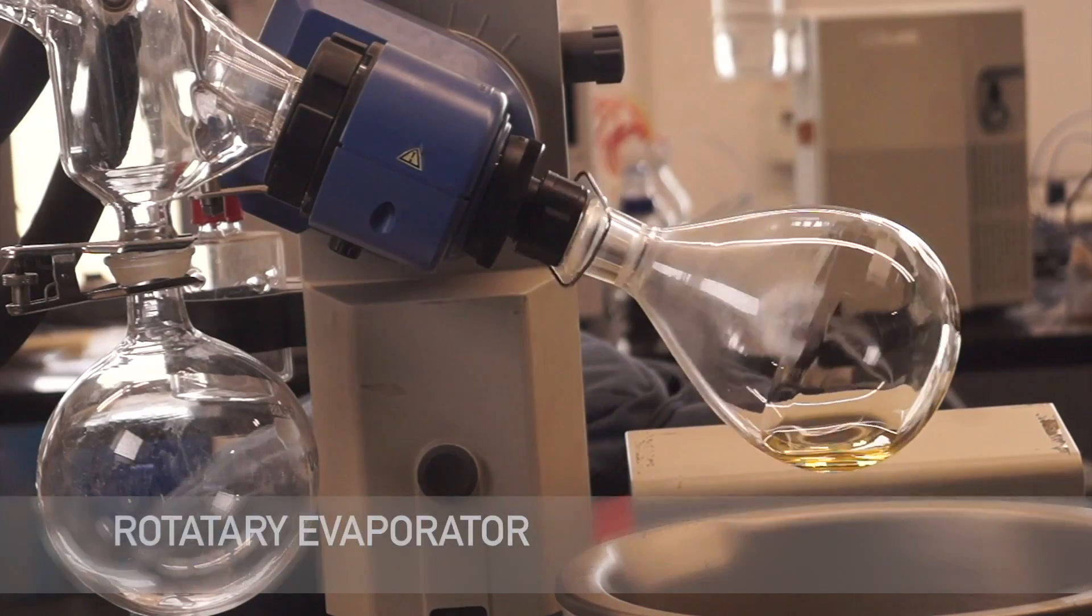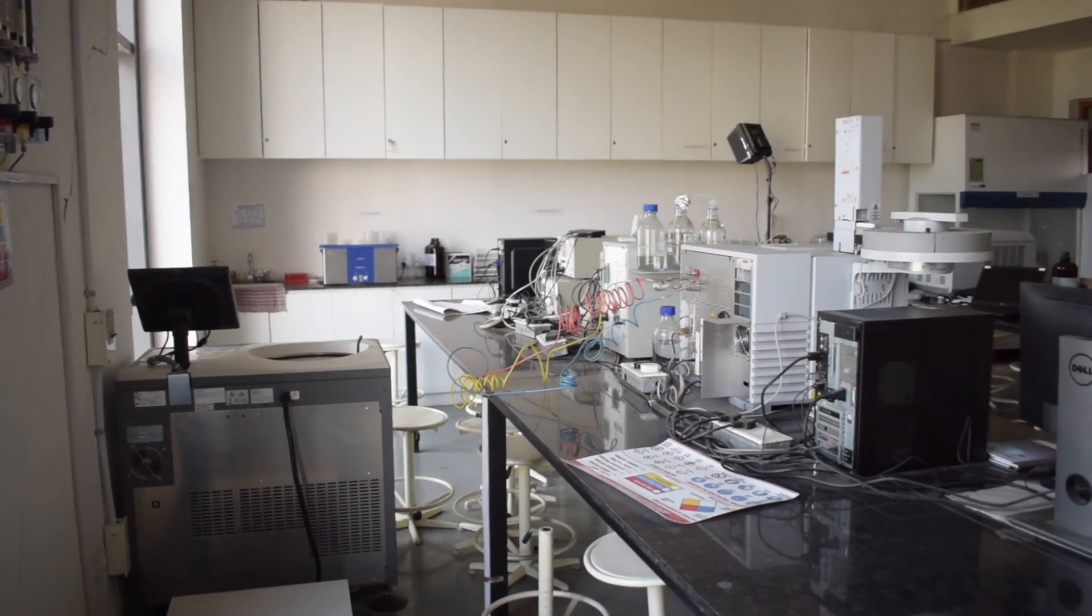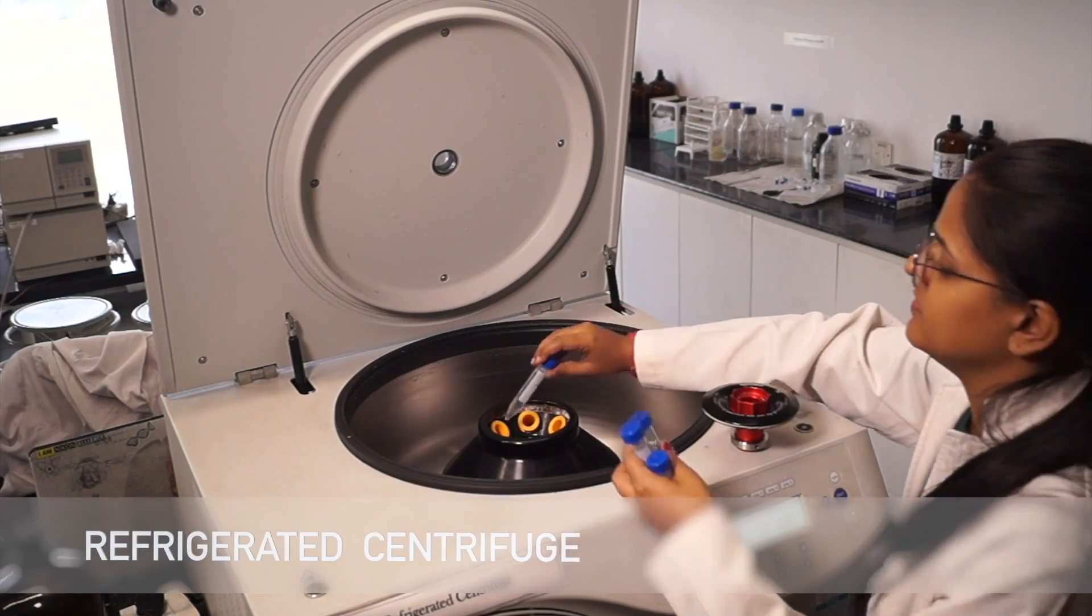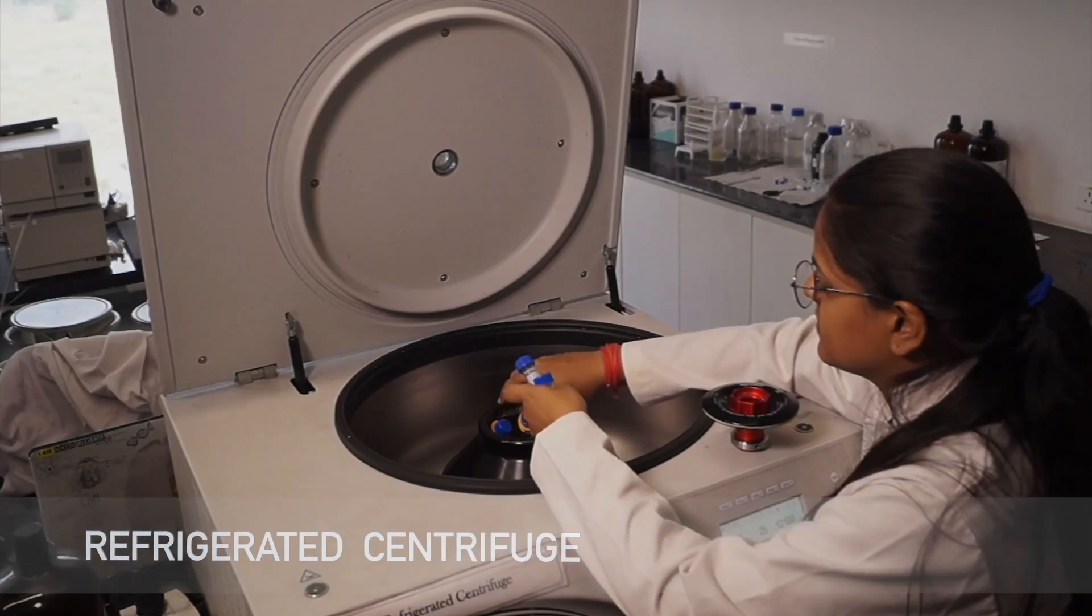A rotatory evaporator is used for the efficient and gentle removal of solvents from samples by evaporation, while a refrigerated centrifuge is used for the separation of microliters.